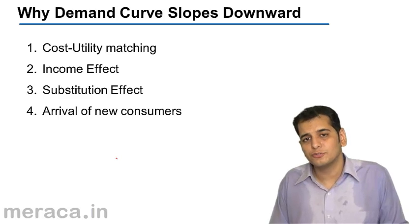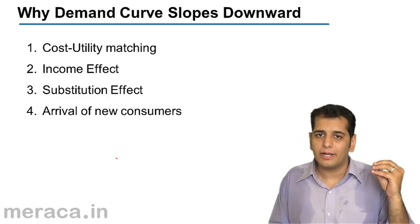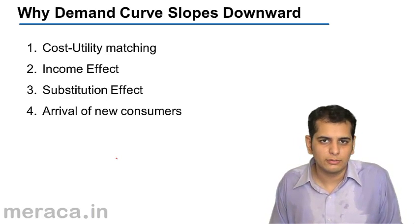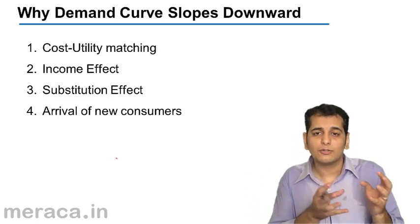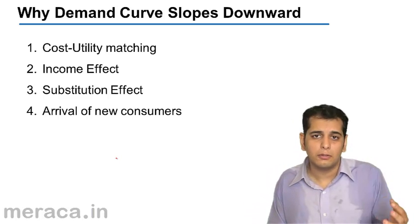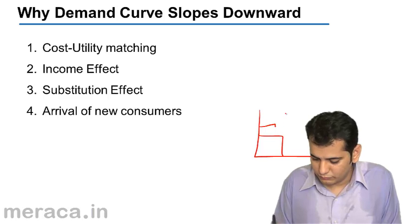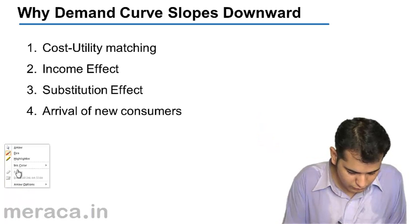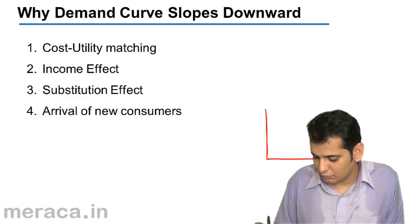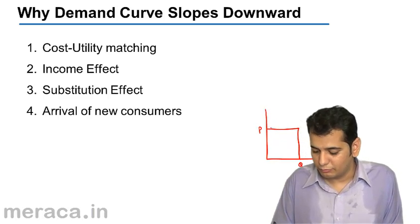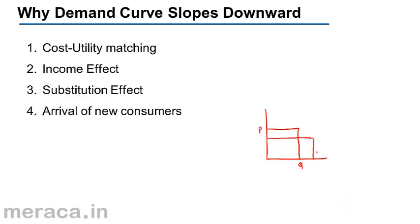The next point is arrival of new consumers. What happens is, when the price of a product falls, it opens up the market for more buyers who earlier could not afford the product. Now with the fall in price, those consumers who earlier could not afford it can now afford the product and they tend to buy it. Because of this, the demand increases with a fall in price.